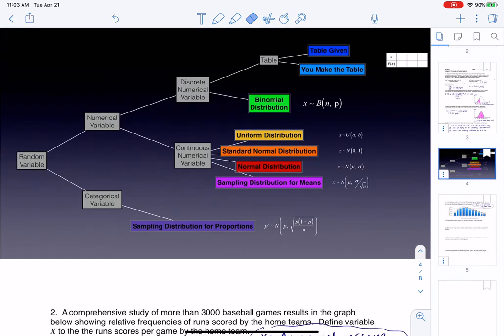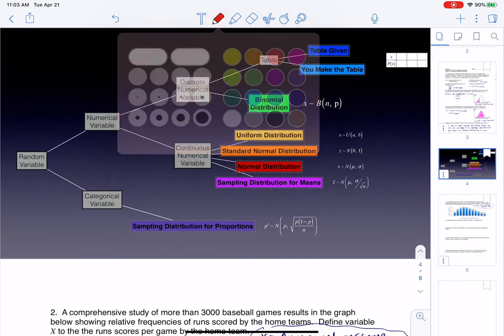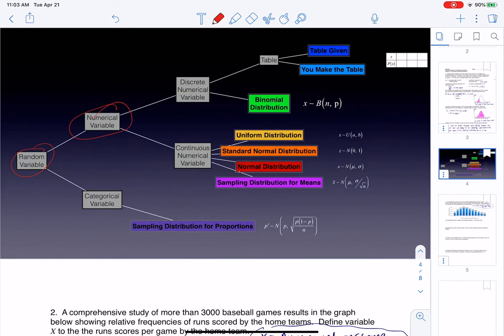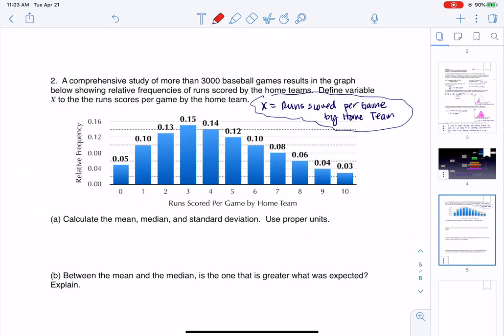In terms of that variable, if I go to my flowchart and start going along this flowchart, I found my variable, it's numerical. I would count the number of runs scored in any baseball game. There wasn't any information about playing 7 games and counting the number of runs or something like that, so this is not a binomial distribution. This is a table problem, and the table was actually given. You might not have recognized the table, but we've done a couple of these before, so let me just show you the beginnings of a table.